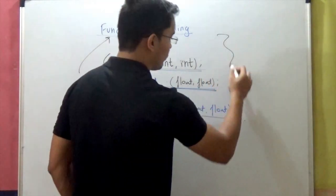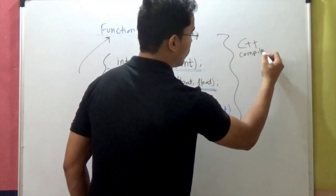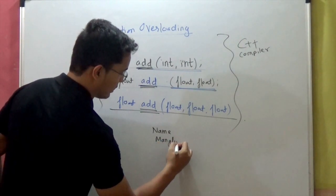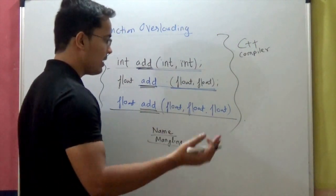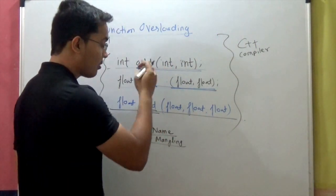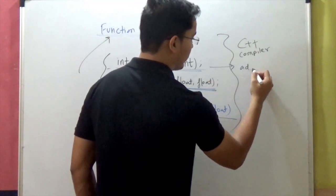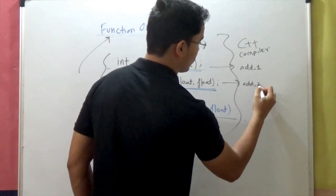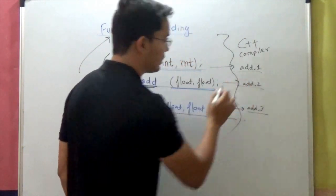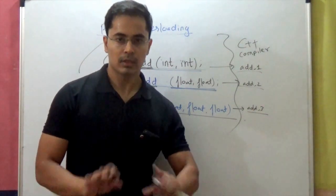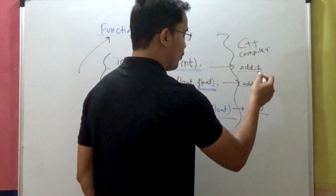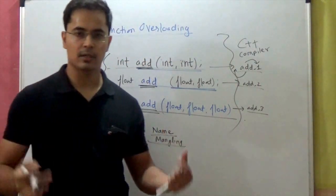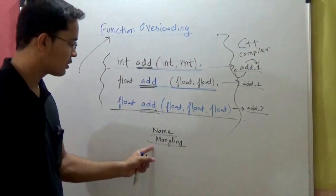Behind the scenes, how your C++ compiler handles function overloading is through something called name mangling. So internally the compiler will add certain characters after or before the names of these functions. For example, one function might be stored internally as add_1, another as add_2, add_3, something like that. So they change the name before compiling. This happens internally by the compiler, and which characters are added — whether before or after the function name — differs from compiler to compiler. This is called name mangling.